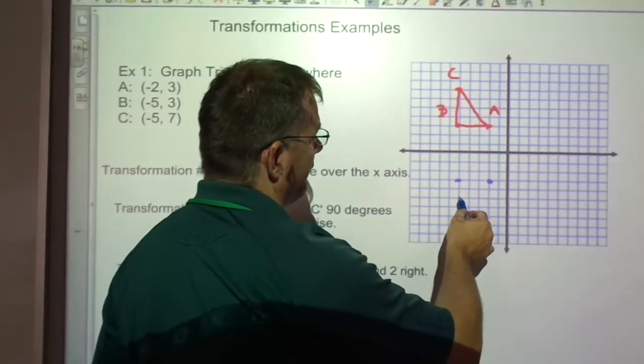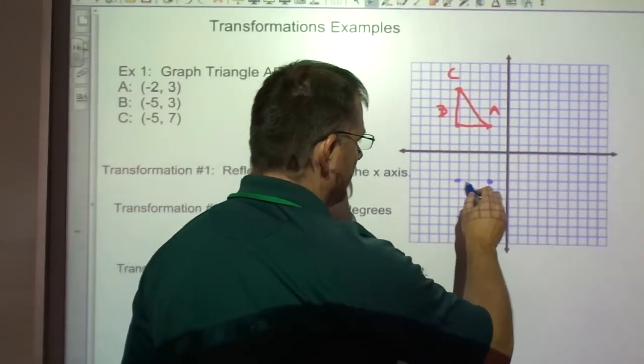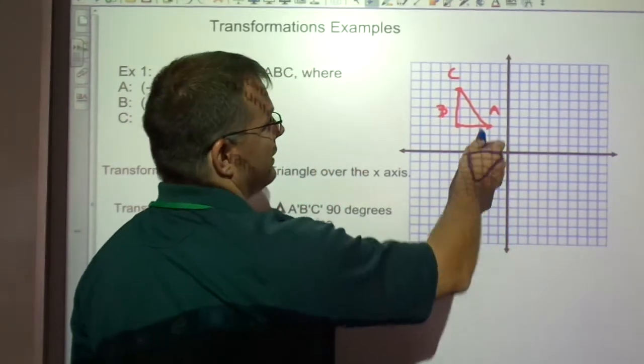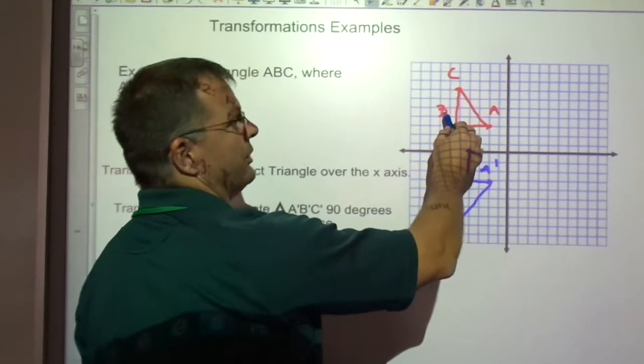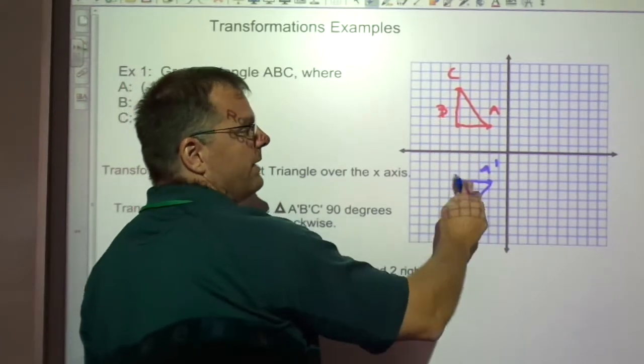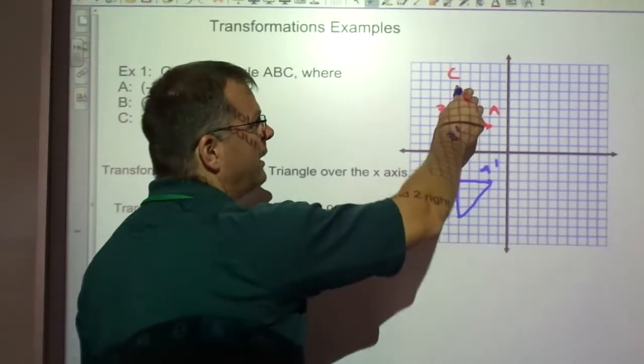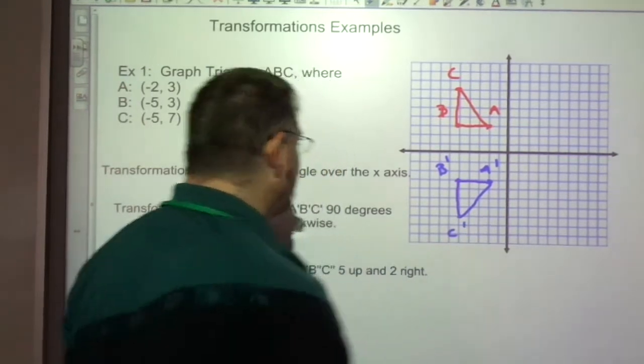This point's going to come here, this point will come here, and this point is 7 above, so it'll end up 7 below. And the way we label these is, this was A, this is A prime, my new A, my transformed A. This was my B, this is my B prime. This was my C, this was my C prime.